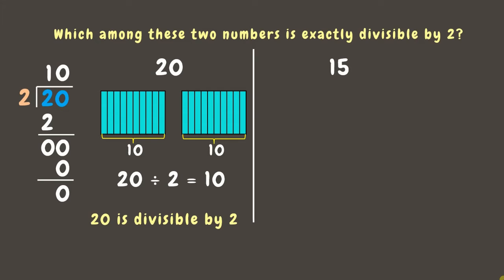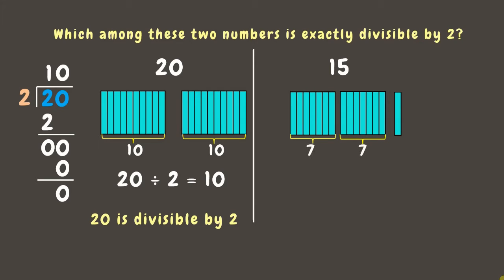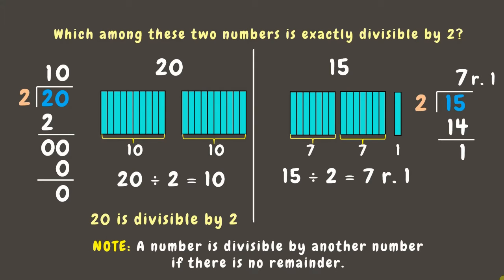Now, let's make 15 rectangles and divide them by 2. We made 2 sets of 7 rectangles with a remainder of 1. This means 15 divided by 2 is 7 with a remainder of 1. Let's check using long division: 15 divided by 2 is 7, and 7 times 2 is 14. 15 minus 14 is 1. Therefore, the answer is 7 remainder 1. Since there is a remainder, 15 is not divisible by 2.